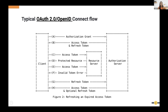The authorization server authenticates the user, checks whether they're authorized, and then issues the access token. Once the client has the access token, it uses it to access a resource — such as an API server or API manager — to call an API and get the data it needs.